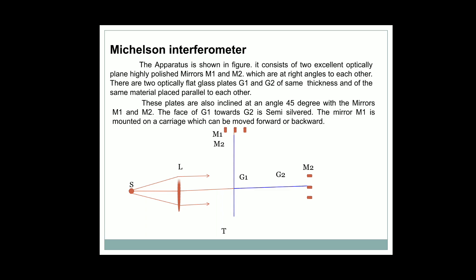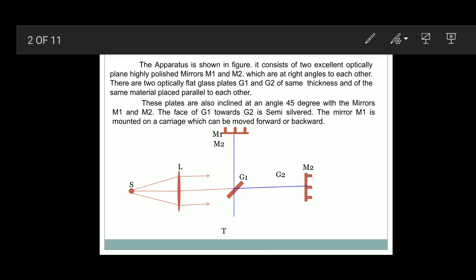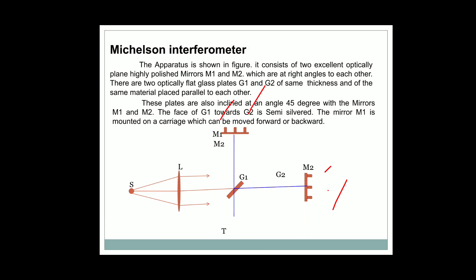L is the convex lens, which is used to render the light ray into a parallel beam. G1 is the glass plate, semi-silverized towards the glass plate G2. M1 is the perfect plain mirror and M2 is one of the perfect plate mirrors, where M1 and M2 are perpendicular to each other. The angle between M1 and M2 can be adjusted by using the screws — we can change the angle between M1 and M2.